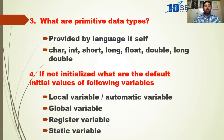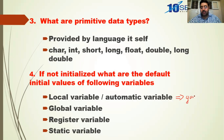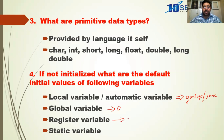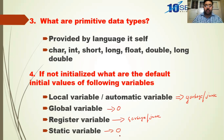If not initialized, what are the default initial values of the following variables? Local variable or automatic variable — by default it is initialized to garbage, also called junk value. Global variable is initialized to zero. Register variable is again initialized to garbage or junk. Static variable is initialized to zero.